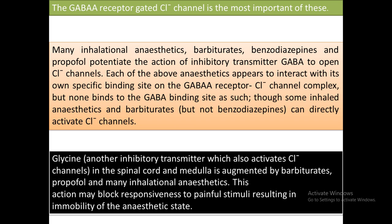The action on glycine may block responsiveness to painful stimuli, resulting in immobility during the anesthetic state. Both GABA and glycine are inhibitory neurotransmitters; they cause opening of chloride channels at the post-synaptic receptor site, interfering with signal transmission and providing the anesthetic property for inhaled agents, barbiturates, and benzodiazepines.